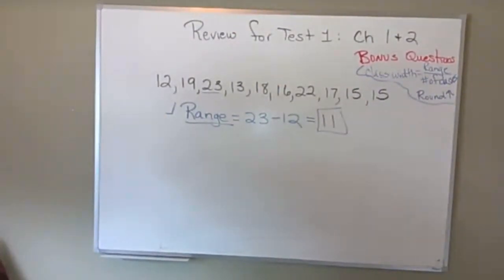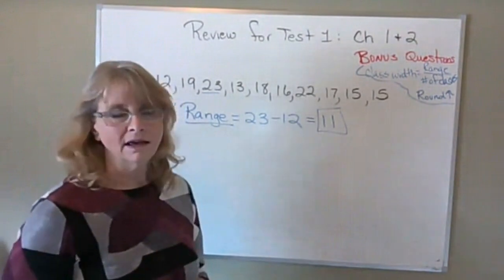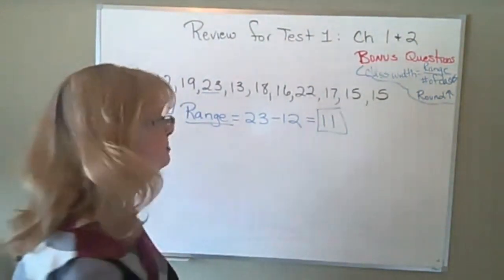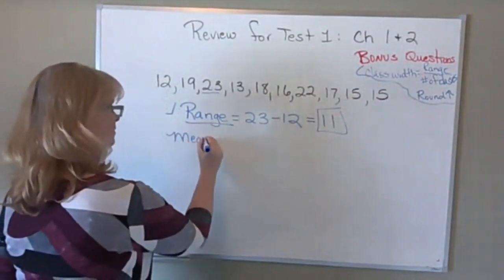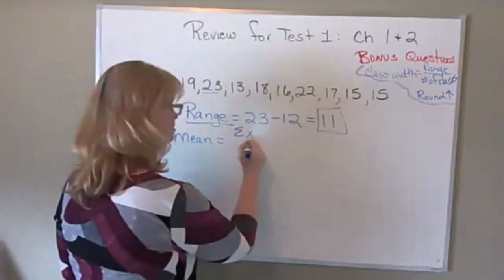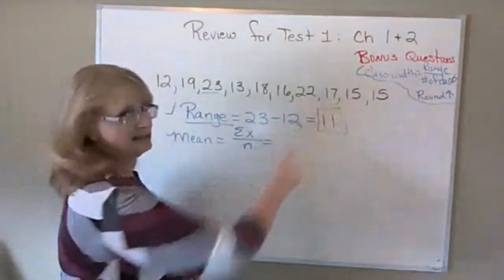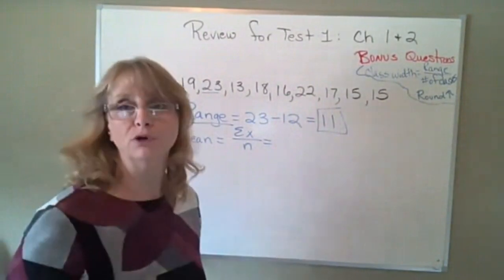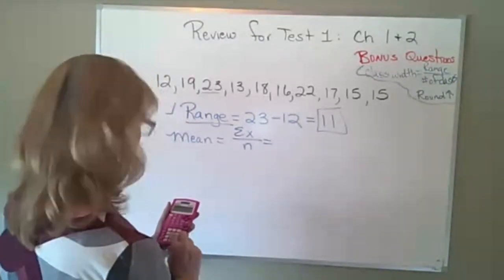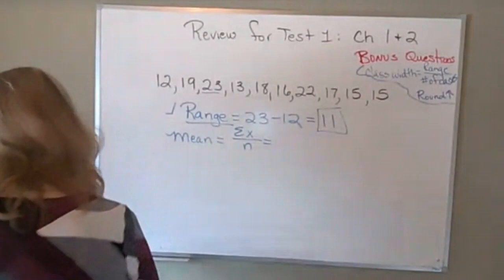The second thing it asks is the mean. You can't do variance unless you know the mean. The symbol for sample mean is X-bar, and it's the sum of the numbers divided by lowercase n. When you show your work for the mean, you don't have to write out all the additions, but I do want to see what you got for that sum so I can tell if you entered something wrong in your calculator.